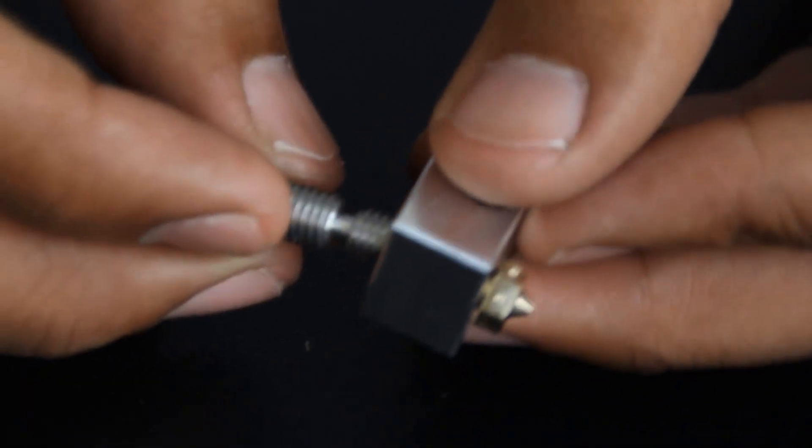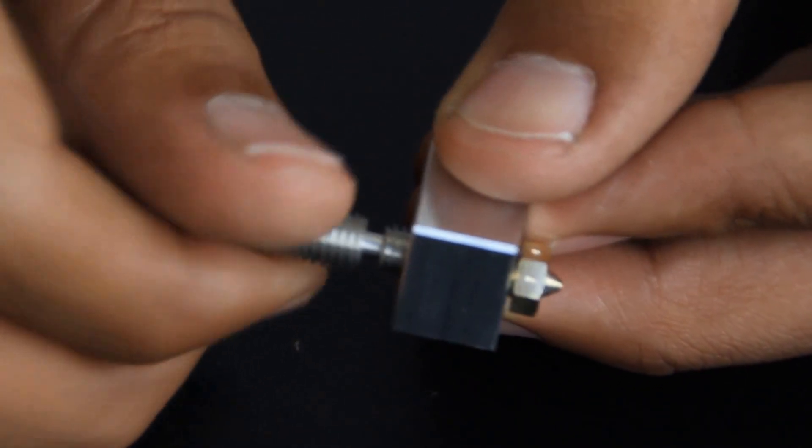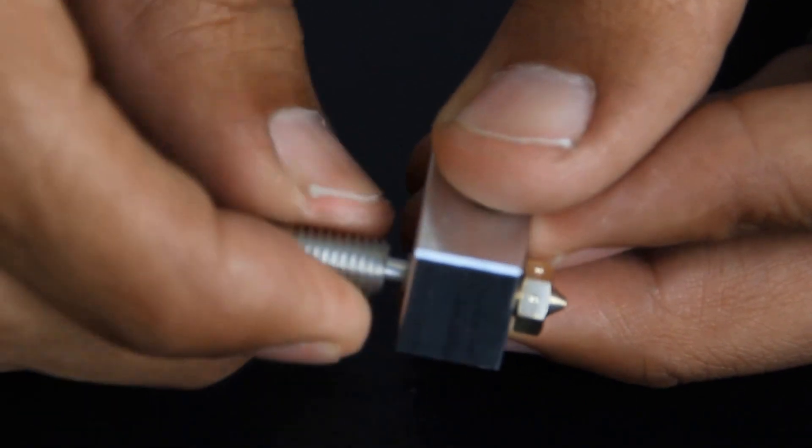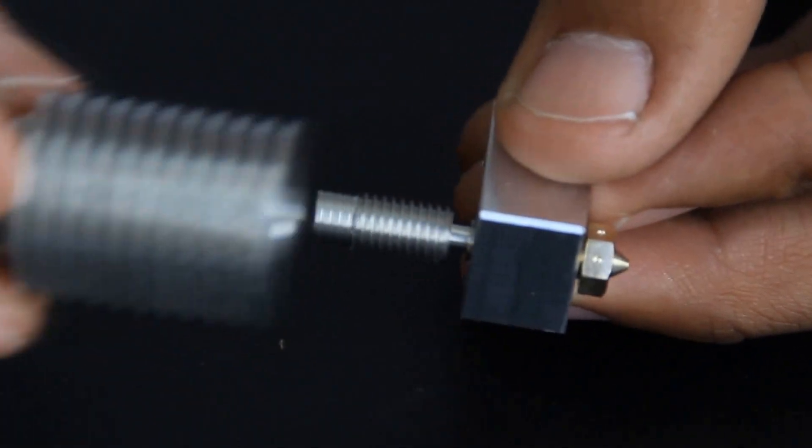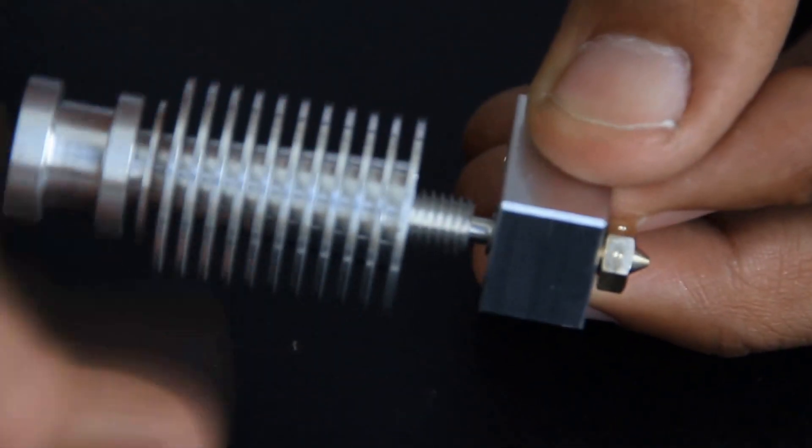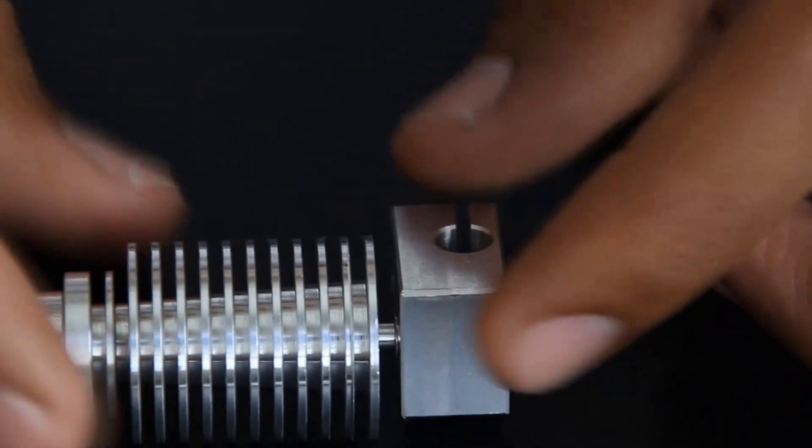Then you're going to take your heat brake, and the heat brake is going to screw the short end onto the actual piece. Again, just finger tighten. Don't need to torque anything right now. Take your heat sink and then screw that in all the way. As far as mechanics go, this is the entire extruder. Really simple to put the mechanical side of the extruder together.